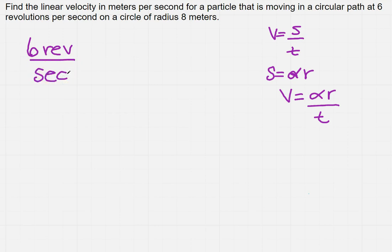Now I need to get that into what? Well, I need to find alpha, right, so that's alpha, so I can get that into pi or radians. So it's going to be 2 pi per 1 revolution.